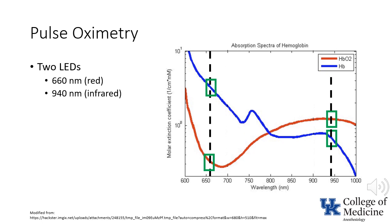Based on the differential absorptions of light, it is possible to estimate the amount of oxyhemoglobin and reduced hemoglobin, which in turn allows calculation of the approximate percentage of hemoglobin that is oxygenated, or the functional saturation.